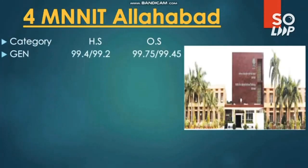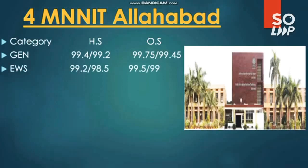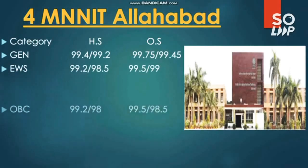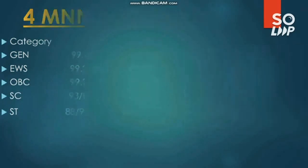The next NIT — number 5 — has cutoffs: General, 99.75 for male and 99.45 for female. EWS: 99.45. OBC: 99.5. SC: 94.88. ST: 96 and 95 percentile.